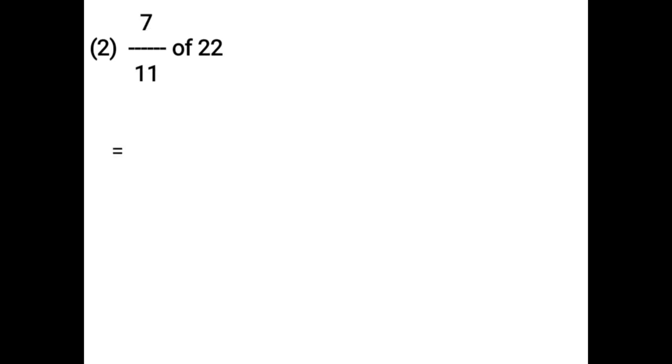7 upon 11 of 22. That is equal to 7 upon 11 into 22. Using the cancellation method: 11 ones are 11, 11 twos are 22, that is equal to 7 twos, which is 14.